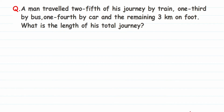We have to find out the length of his total journey — this is unknown to us. Whenever we have to find out an unknown, we assume it as a variable. So let the total distance of the journey be x kilometers.